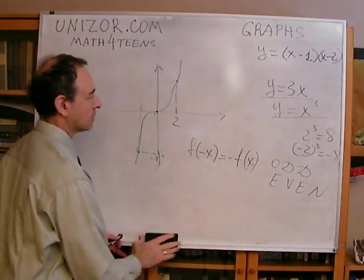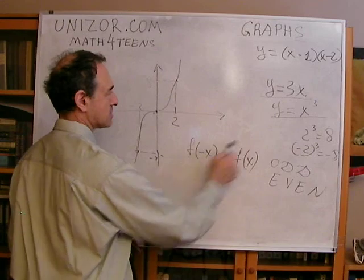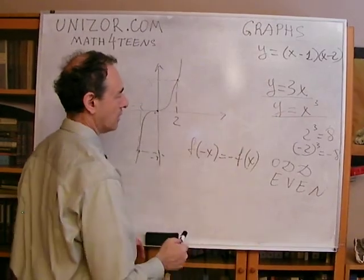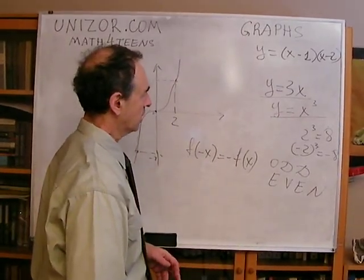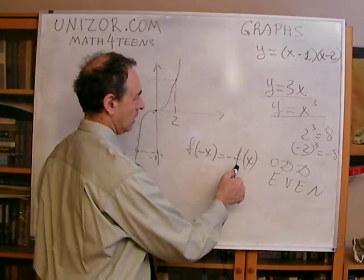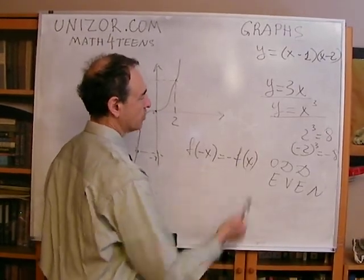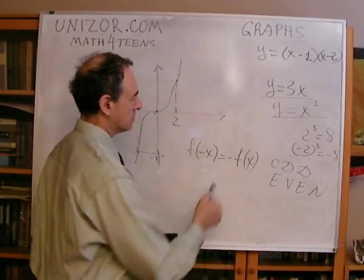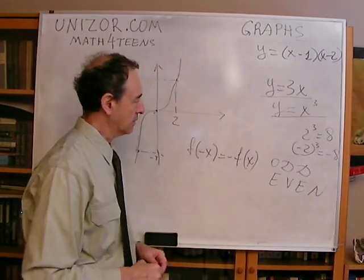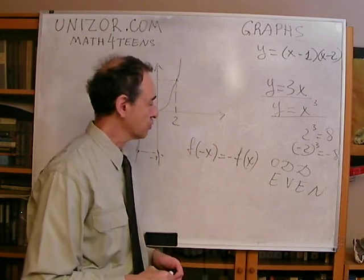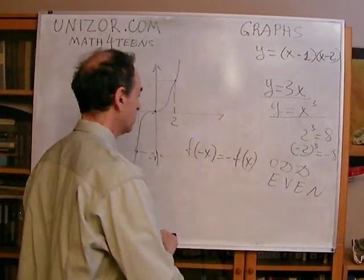If you substitute −x for x into the formula, you get the same absolute value as with x, but with a negative sign applied. Now with even functions — let me start from the definition: an even function does not change its value if you change the sign of the argument.